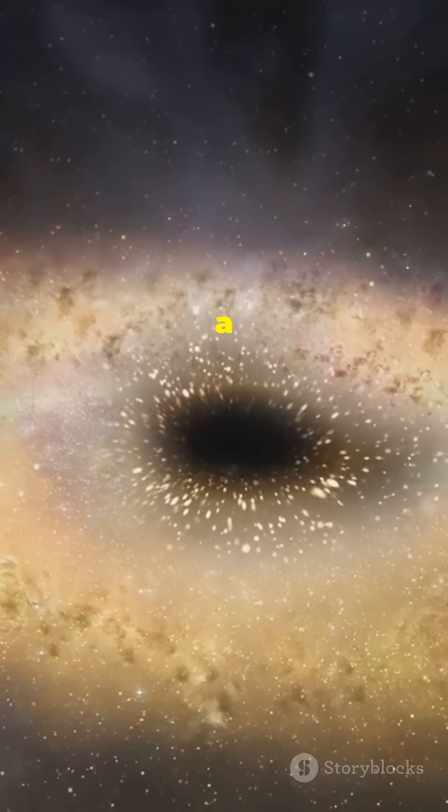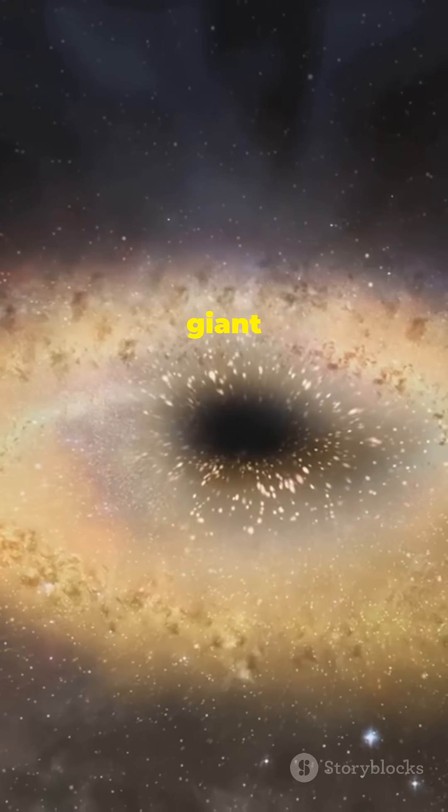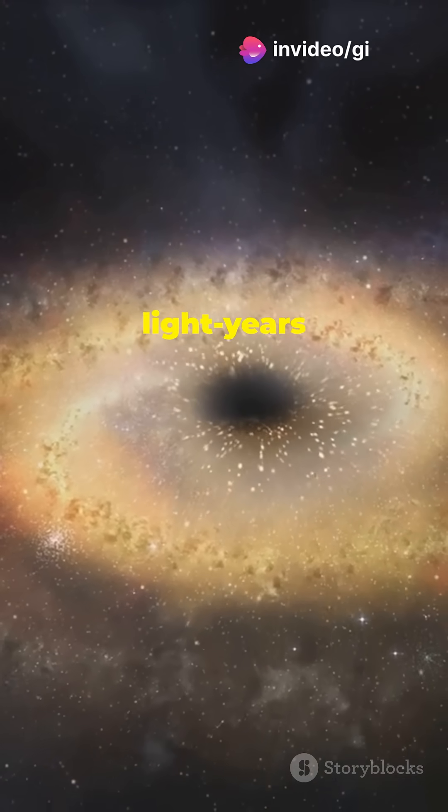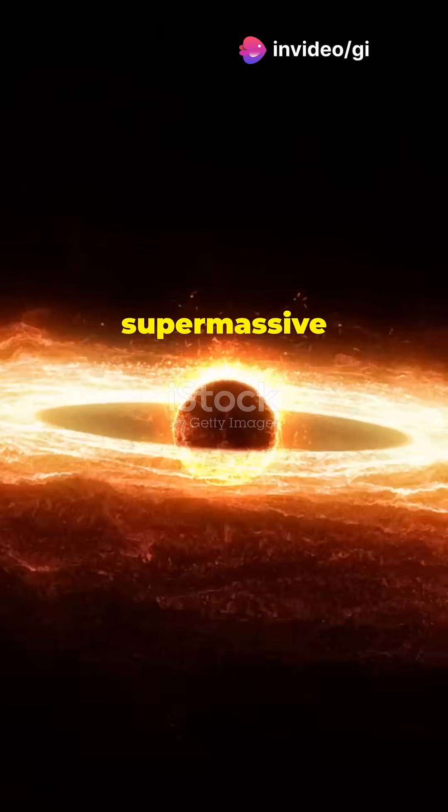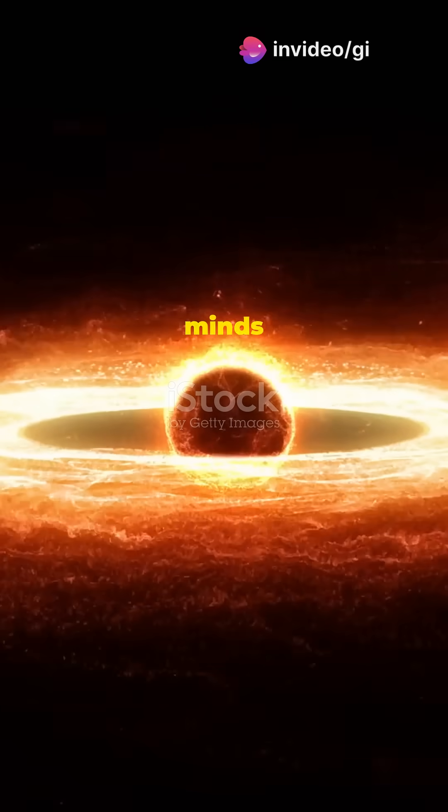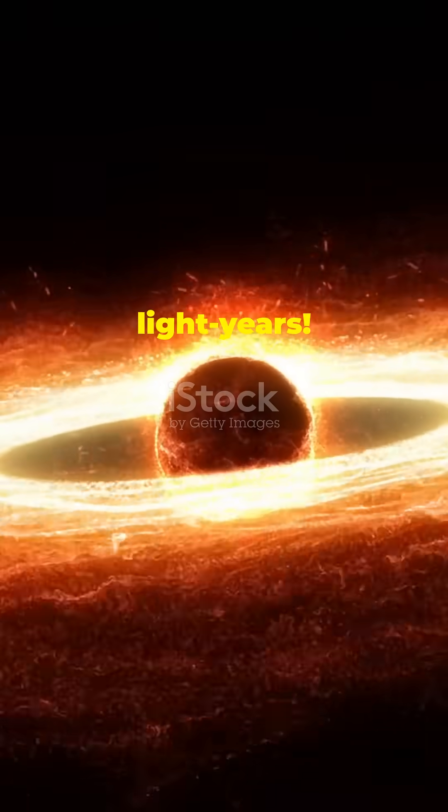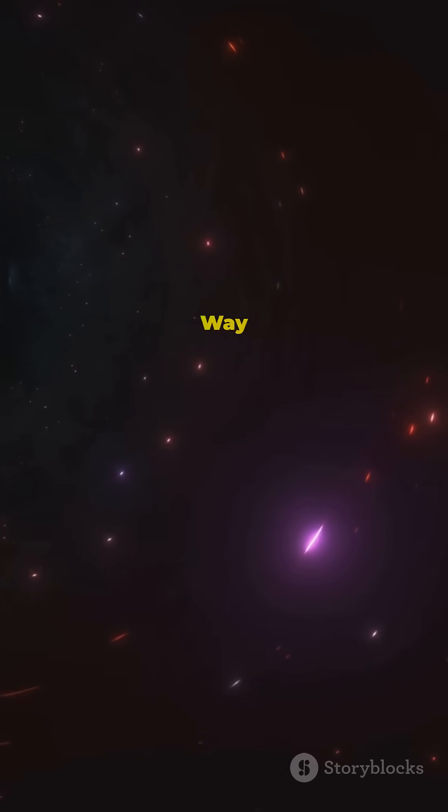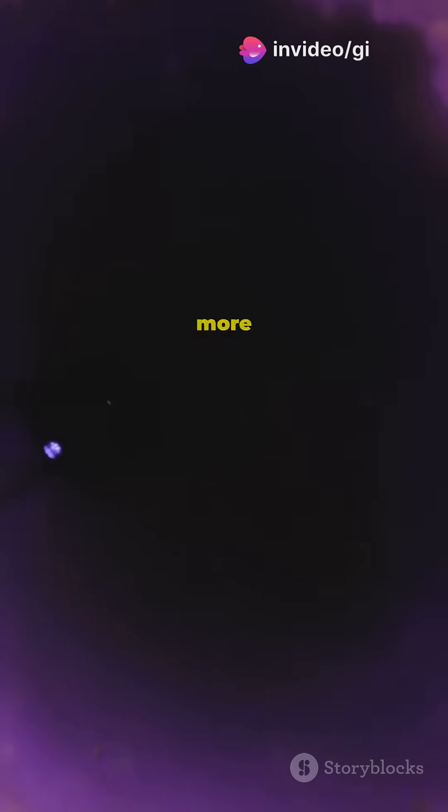Meet PBCJ2333.9-2343, a giant radio galaxy located about 657 million light-years away. At its heart lies a supermassive black hole that's blowing our minds with jets stretching over 16 million light-years. That's more than 150 times the diameter of our Milky Way galaxy.